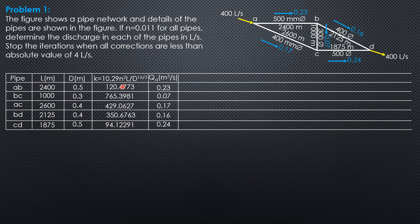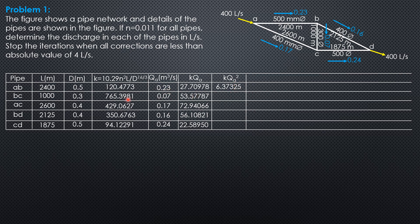Next, compute the KQA column — K times the assumed discharge Q. So 120.4773 × 0.23, 765.3981 × 0.07, 429.0627 × 0.17, 350.6763 × 0.16, and 94.12291 × 0.24, each giving their respective values. Then compute KQA² — K times Q squared: 120.4773 × 0.23², 765.3981 × 0.07², 429.0627 × 0.17², 350.6763 × 0.16², and 94.12291 × 0.24², each to 6 significant figures.